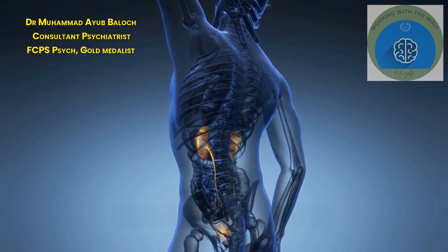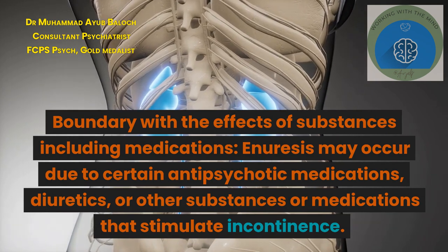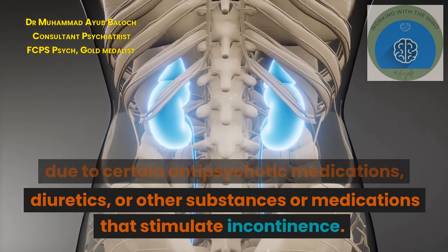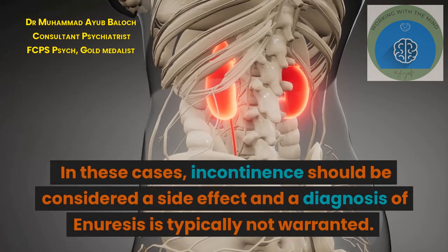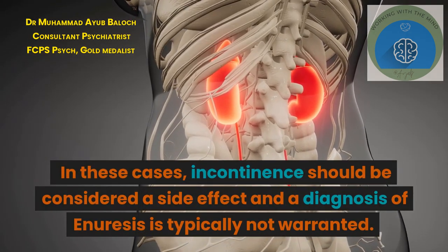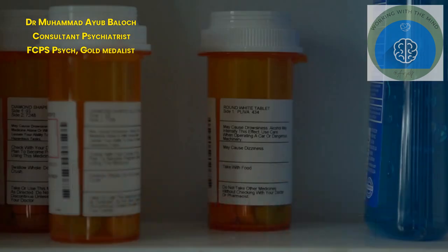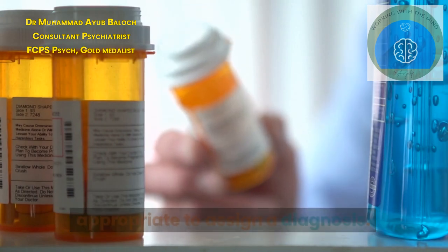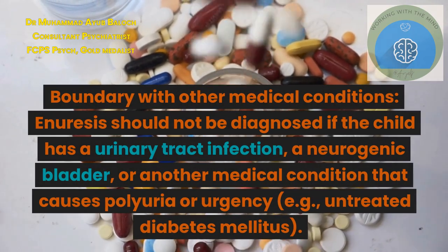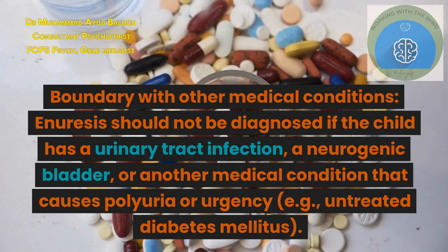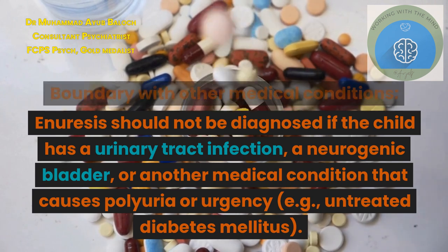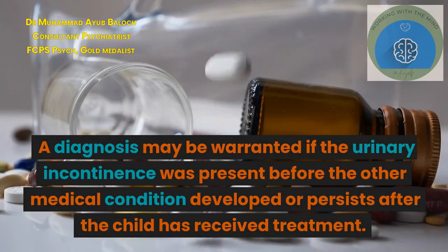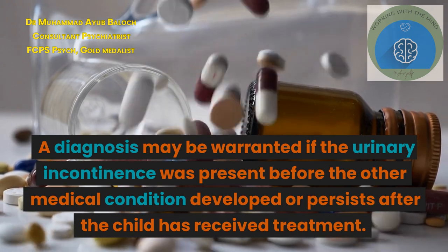Differential diagnosis: regarding the boundary with effects of substances including medications, enuresis may occur due to certain antipsychotic medications, diuretics, or other substances that stimulate incontinence; in these cases incontinence should be considered a side effect and a diagnosis of enuresis is typically not warranted. If the enuresis was present before administration of medication, it may be appropriate to assign a diagnosis. Regarding the boundary with other medical conditions, enuresis should not be diagnosed if the child has a urinary tract infection, a neurogenic bladder, or another medical condition causing polyuria or urgency, such as untreated diabetes mellitus. A diagnosis may be warranted if the urinary incontinence was present before the other medical condition developed or persists after treatment.